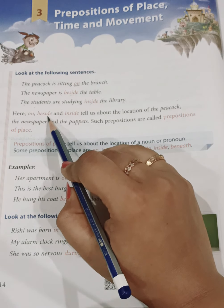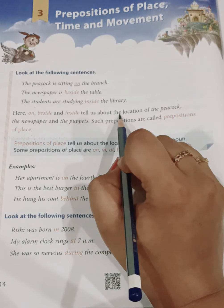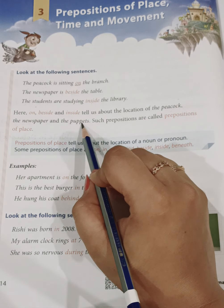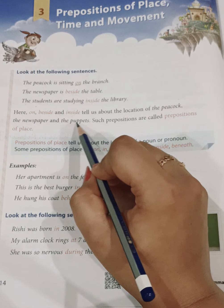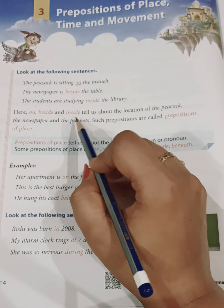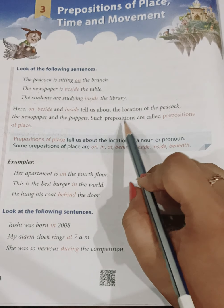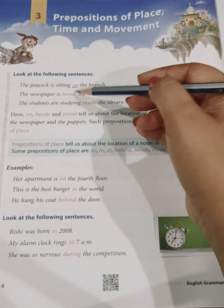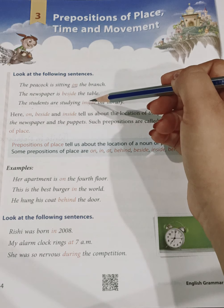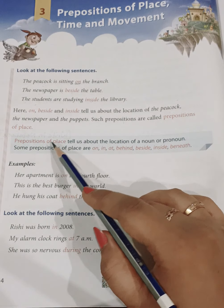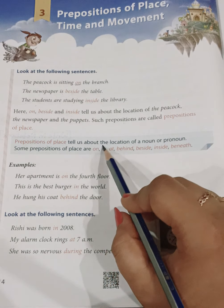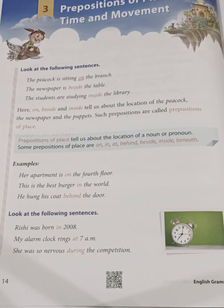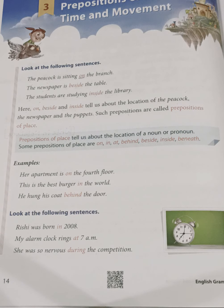So here 'on', 'beside' and 'inside' tell us about the location of the peacock, the newspaper and the students. Note: 'puppets' in the slide should read 'students' — it is a misprint. Such prepositions are called prepositions of place. So prepositions of place tell us about the location of a noun or a pronoun — exactly what the place is.